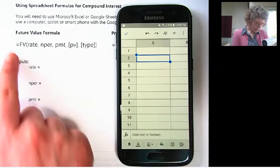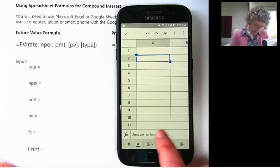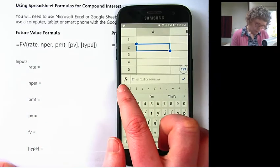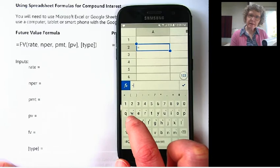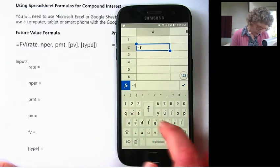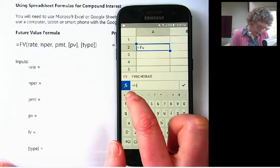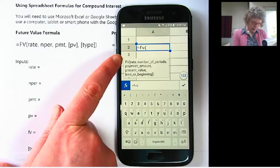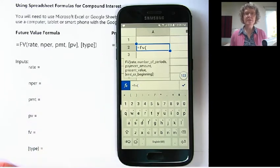So what we'll be doing is typing in equals FV. Let's take a little practice, FV. And when I hit parentheses, it tells me all the inputs.